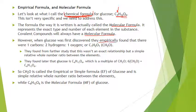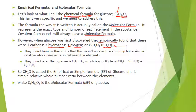However, when glucose was first discovered, they empirically — which means experimentally — found that glucose had one carbon, two hydrogens, and one oxygen, or the chemical formula CH2O. Now, as an aside, glucose is a carbohydrate. The name carbohydrate comes from the fact that it looks like carbon with water attached to it — that's not exactly what it is, but that's how you get the name.